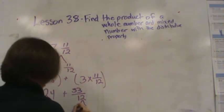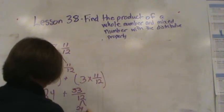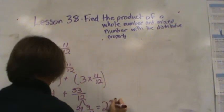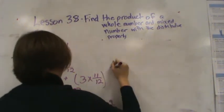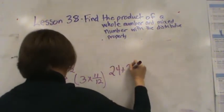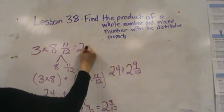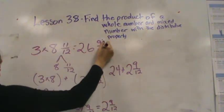Decompose. There are 24 twelfths and 9 twelfths. That is like saying 2 and 9 twelfths. So I have 24 plus 2 and 9 twelfths. 24 plus 2 is 26 and I have 9 more twelfths.